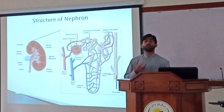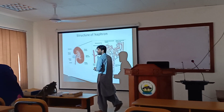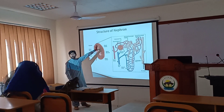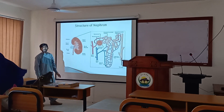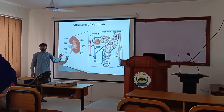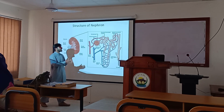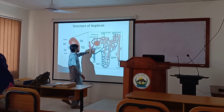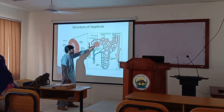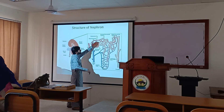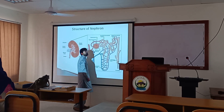Nephrons are the basic structural units of the kidney. Let's look at this diagram. This is a nephron's diagram. There are billions of nephrons. If we zoom into a nephron and examine it, we can see its detailed structure.